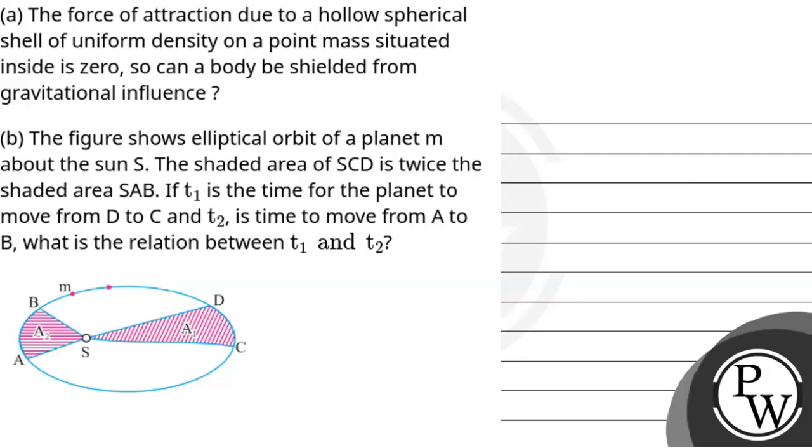Hello, let's read the question. The question says that the force of attraction due to a hollow spherical shell of uniform density on a point mass situated inside is zero. So can a body be shielded from gravitational influence?